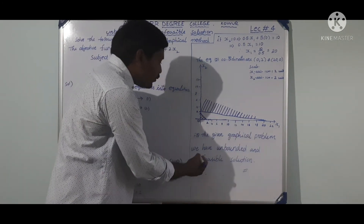Second equation coordinates: represent x1 equal to 0 and x2 equal to 2. Next coordinates: x1 equal to 20 and x2 equal to 0.